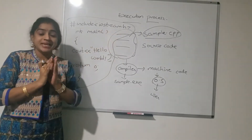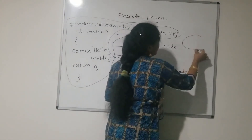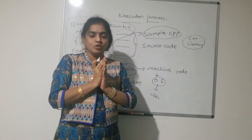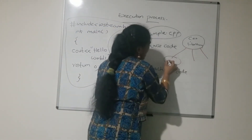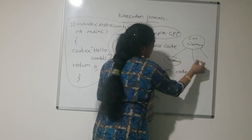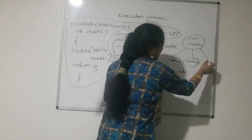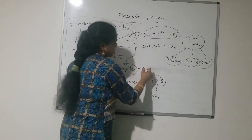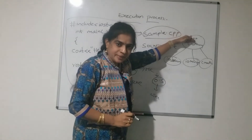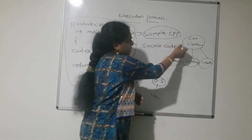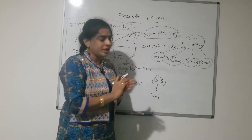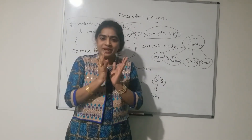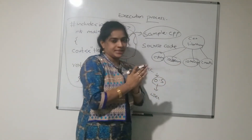iostream.h is a header file. The C++ library is a collection of header files. For example, iostream.h is one header file, iomanip.h is another, and there is also cmath, cstring, and many others. A header file is a collection of functions and classes — it contains some functions and classes.